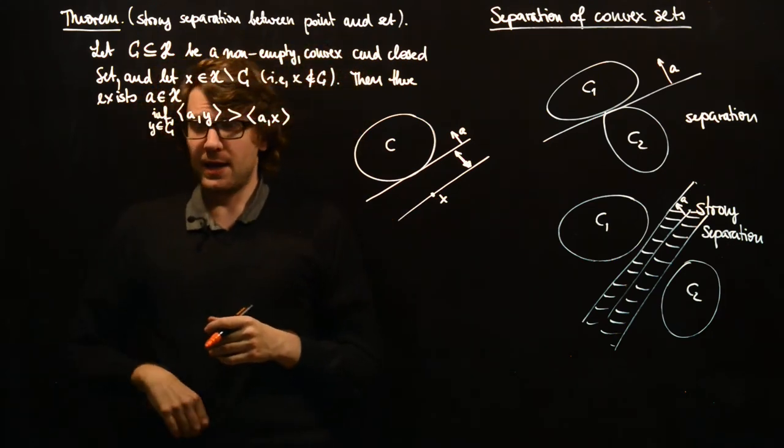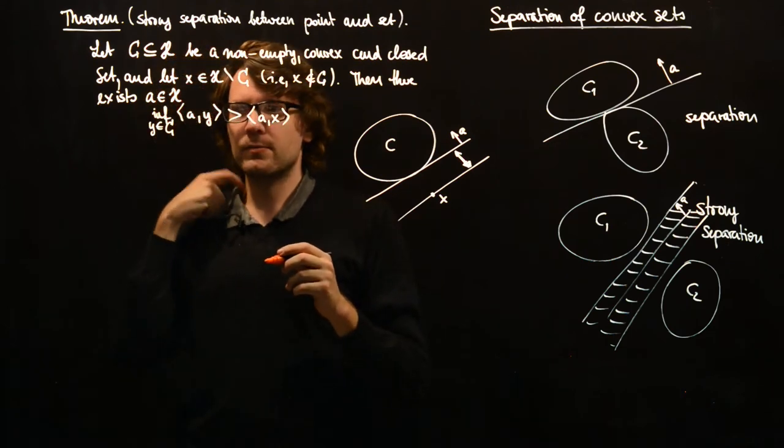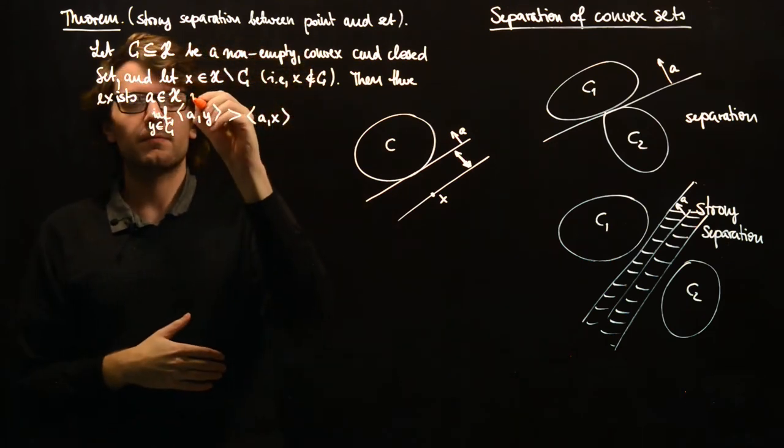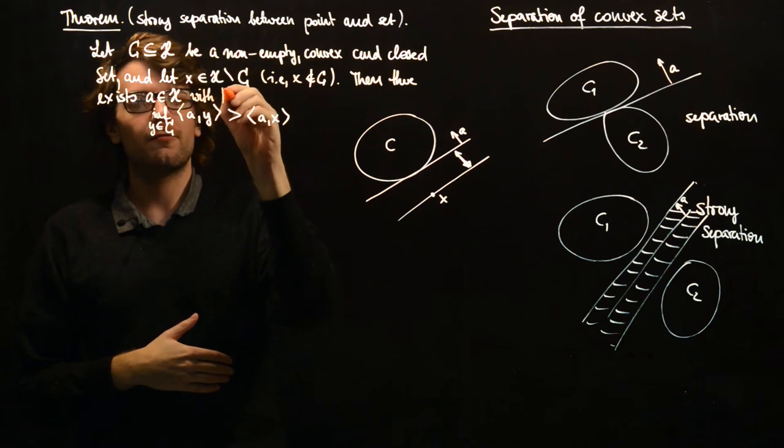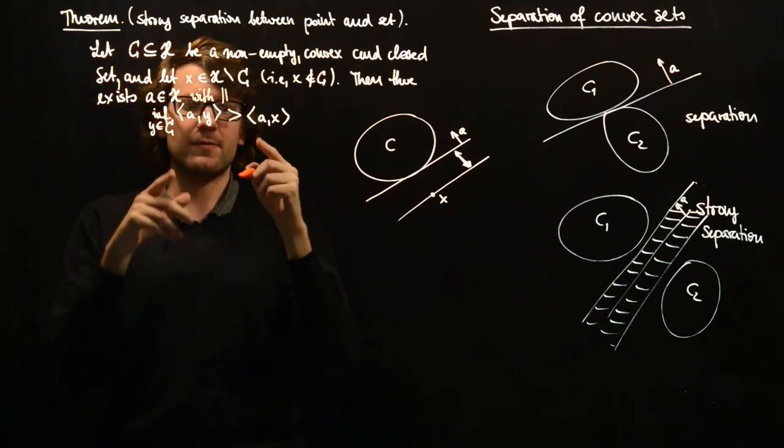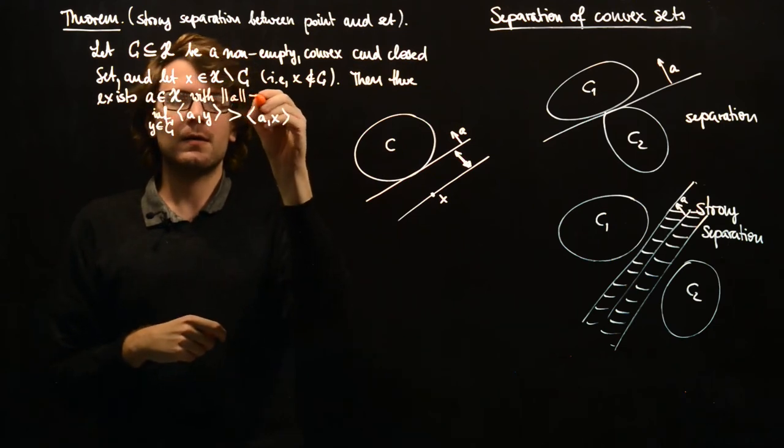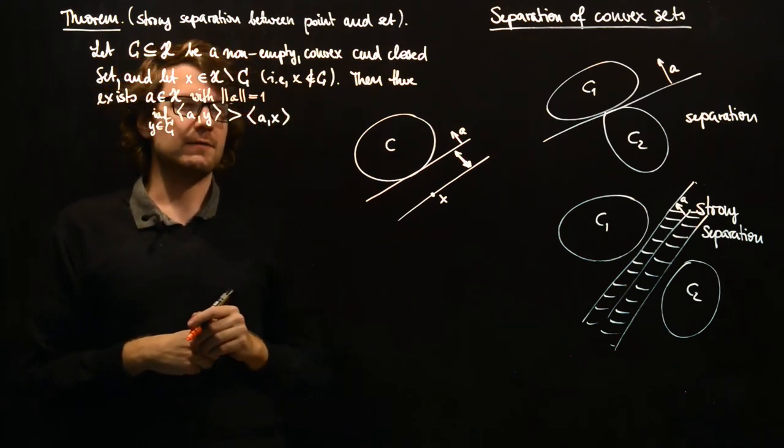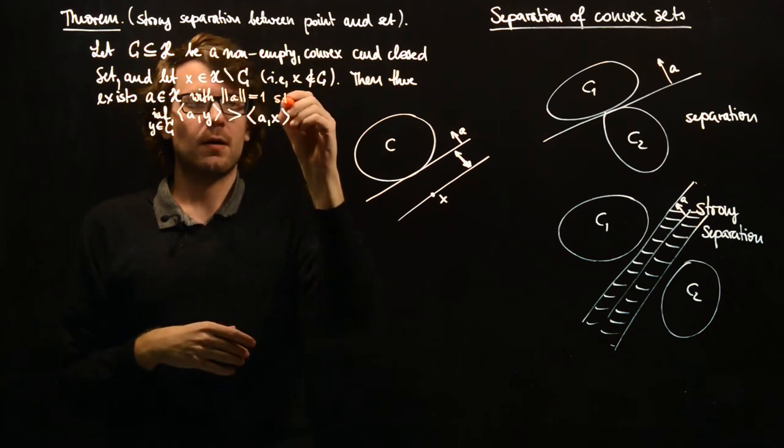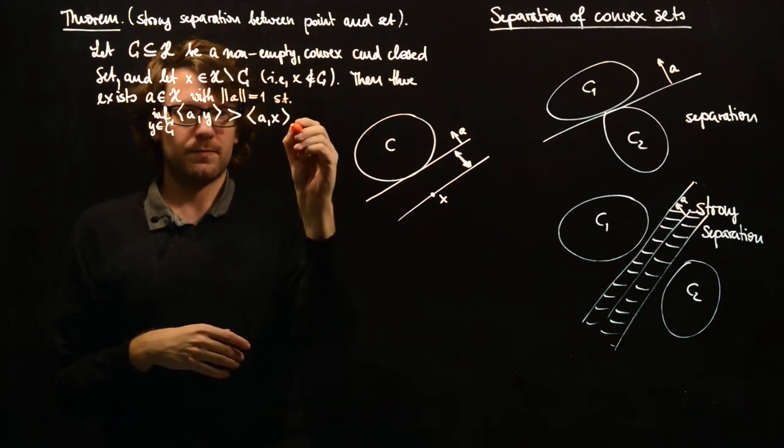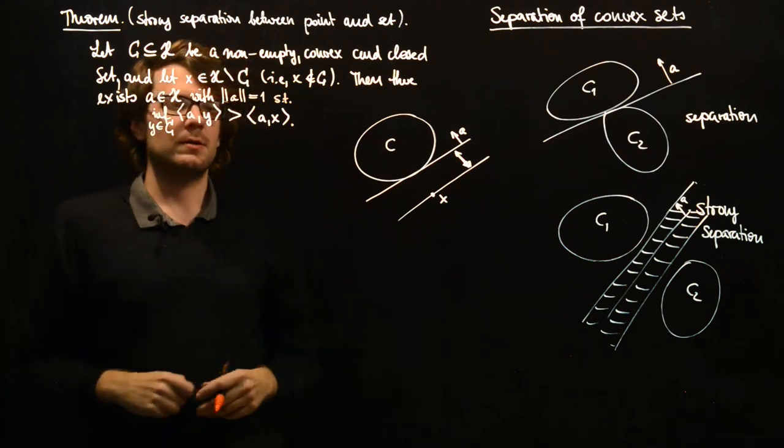So the infimum of this should still be greater and not equal to the same thing at the point X. And we can even write, since the length of the vector A does not really play a role here, we can even set this to 1. And then we get this result.